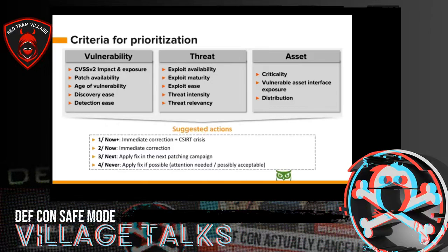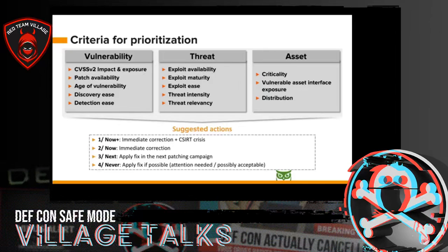The first action tier is: it's very urgent — ask for immediate correction and open a crisis room. The second tier: it's urgent — ask for immediate correction and verify the correction is efficient. The third action: it's a known vulnerability — apply the fix in the next patch campaign, but nothing more. Finally, if the vulnerability matches no top criteria, apply a fix if possible, but we don't give it specific attention — we have to choose our battles and some vulnerabilities we simply don't prioritize.